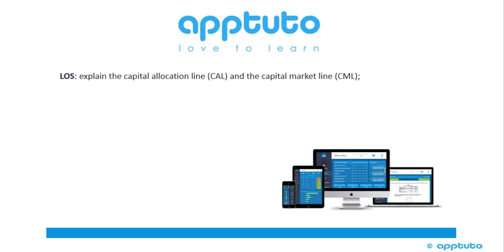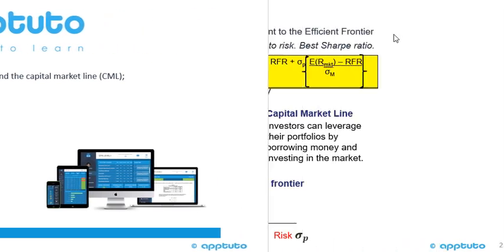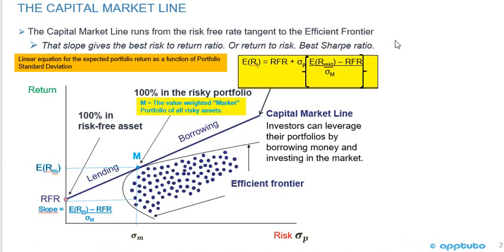This LOS explains the capital allocation line and the capital market line. The capital market line runs from the risk-free rate tangent to the efficient frontier. Here we have the risk-free rate, here we have the efficient frontier which we have seen in a previous LOS, and there's our market portfolio. So actually the capital market line is a capital allocation line, but it's a special case.